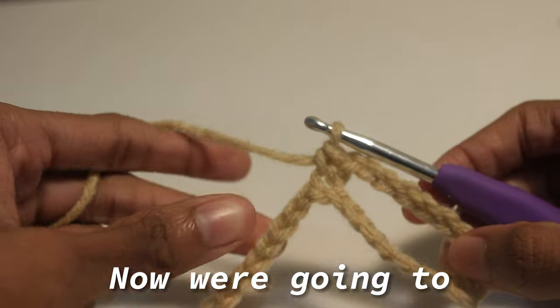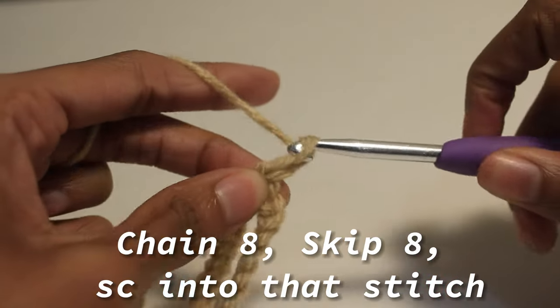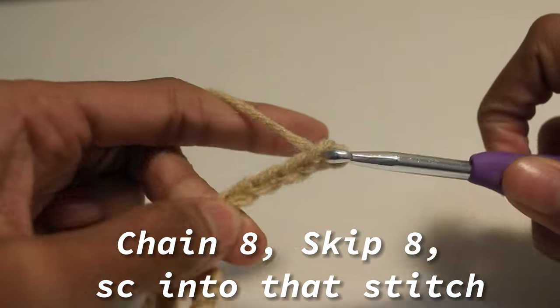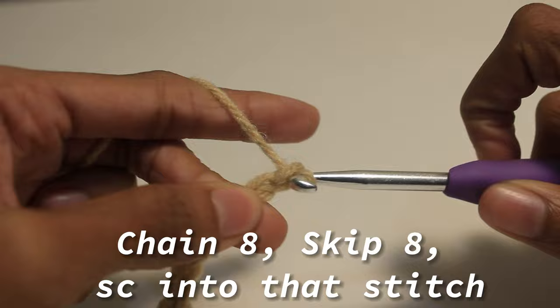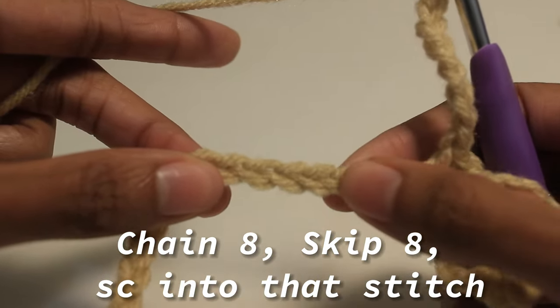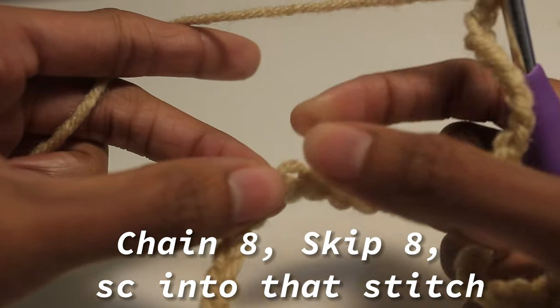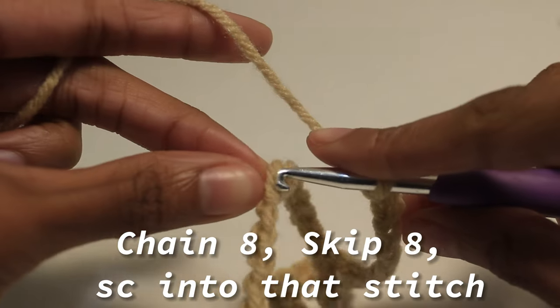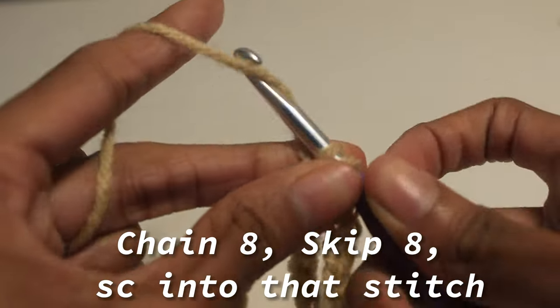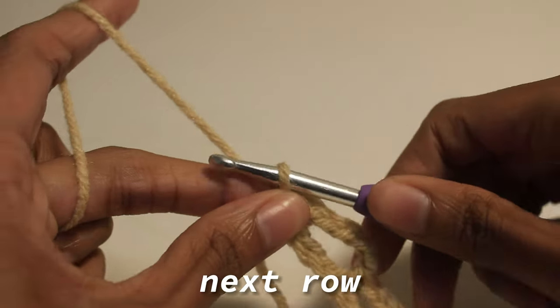Now we're going to repeat this into the end of the row, so chain eight, skip eight, and single crochet into that stitch. Once you're at the end, chain up eight to start the next row.